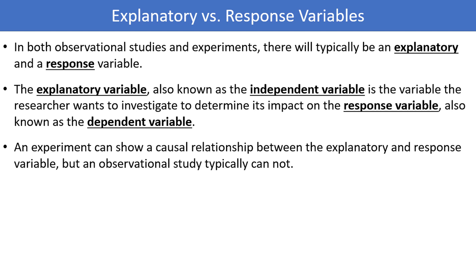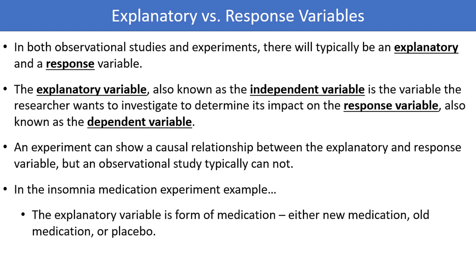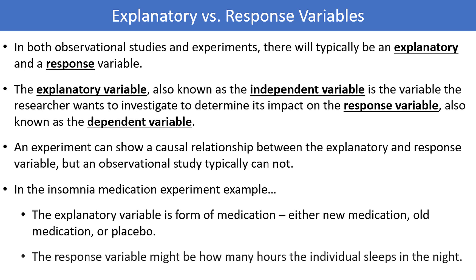Thinking back to our insomnia medication example, the explanatory variable is form of medication — either new medication, old medication, or placebo. The response variable might be how many hours the individual sleeps in the night. Notice here the explanatory variable is categorical, represented by the three different treatment groups in our experiment. As long as we have randomly assigned members to each group, the only reason we should expect to see a change in hours of sleep is due to which treatment group the individual is assigned to.